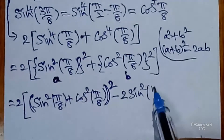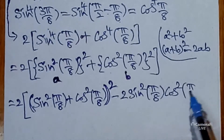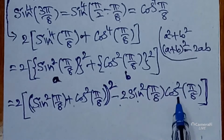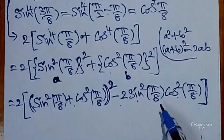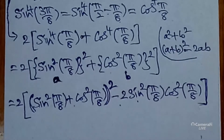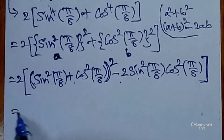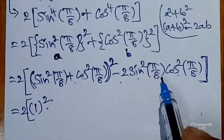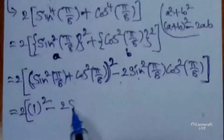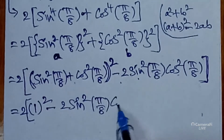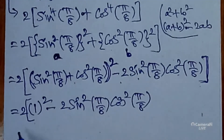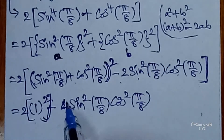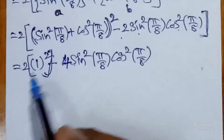Since sin²(π/8) + cos²(π/8) = 1, that whole square is 1² = 1. So we have 2 × [1 − 2·sin²(π/8)·cos²(π/8)]. Multiplying the 2 inside: 2 − 4·sin²(π/8)·cos²(π/8).